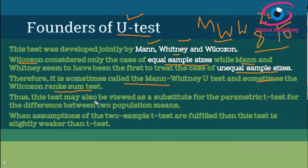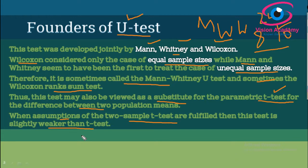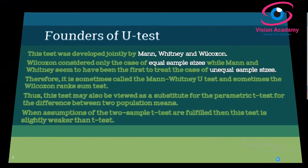The Mann-Whitney U test is sometimes viewed as a substitute for the parametric t-test for the difference between two population means. When the assumptions of the two-sample t-test are fulfilled, this test is slightly weaker than the t-test. However, when those assumptions are not fulfilled — when data is ordinal and the population is unknown — the Mann-Whitney U test is the best tool.